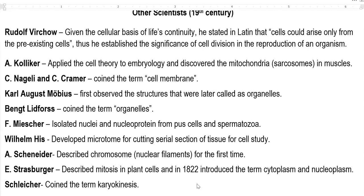The next scientist is Koliker, who applied cell theory to the field of embryology. He also discovered the presence of mitochondria in greater numbers in muscle cells. Since mitochondria are related to energy production, their numbers are automatically higher in muscle cells. These specific mitochondria in muscle cells were referred to as sarcosomes.